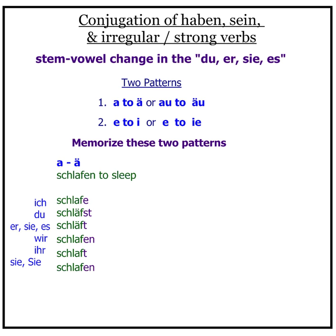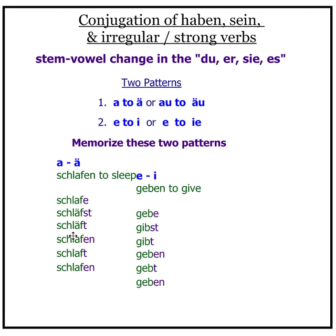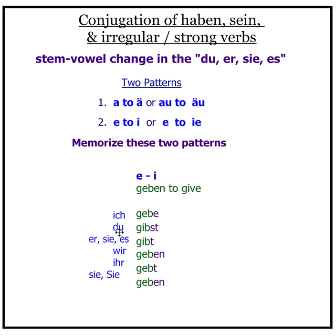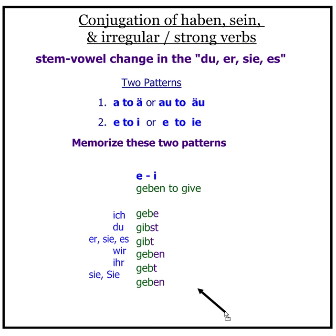Also, hier ist noch ein Beispiel. Geben, to give, also has the 'e' to 'i' pattern: ich gebe, du gibst, er/sie/es gibt. Wir geben, ihr gebt, sie/Sie geben. Notice that after the du, er, sie, es forms, the conjugation returns to the pattern you're familiar with from regular verbs — simply stem plus ending.